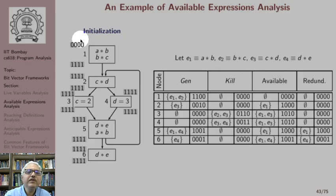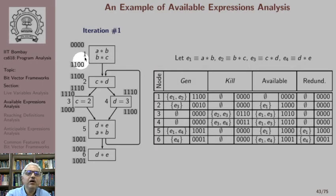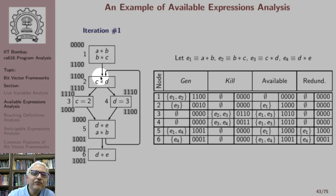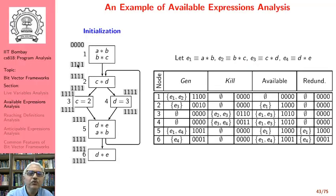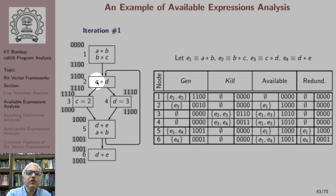At the start of the program we have boundary information which is the empty set. At all other nodes we initialize to all ones and then start performing the analysis. At the exit of node 1, the values are 1 1 0 0, meaning a*b and b*c are available. At the entry of node 2, we take an intersection of this exit value and the initialization at node 5, which is 1 1 0 0, so initially expressions a*b and b*c are considered available at the start of node 2. In basic block 2, the third expression c*d is computed, giving exit value 1 1 1 0, which is the value at the entry of nodes 3 and 4.